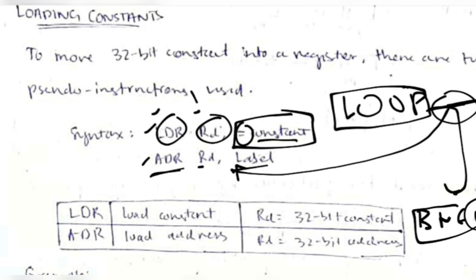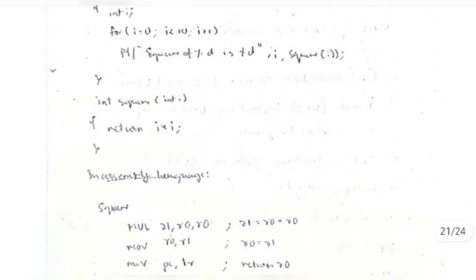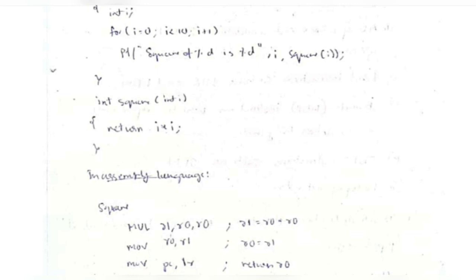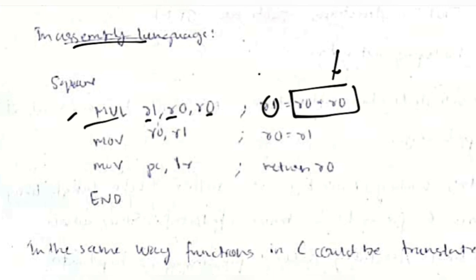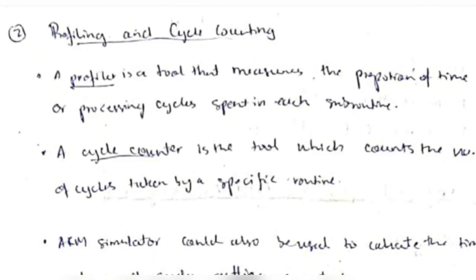We can convert C code to ARM assembly. For example, a C function returning the square of a number translates to: MUL r1, r0, r0 (multiply r0 by itself, store in r1), MOV r0, r1 (move result back to r0), then return r0 to PC. This is equivalent to the C return statement for computing the square.